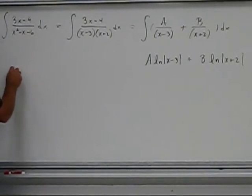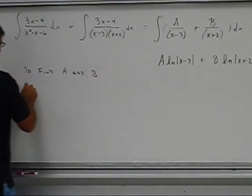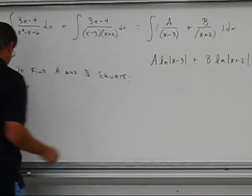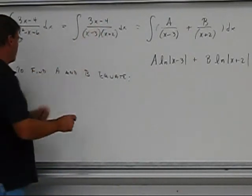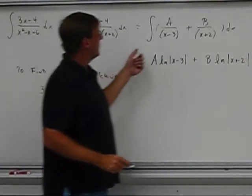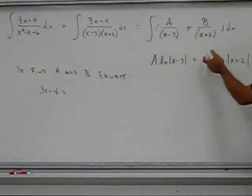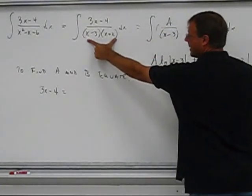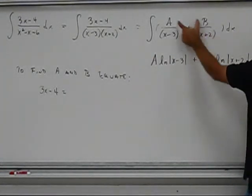So what we have here to find a and b, equate, let's equate this numerator here, 3x minus 4, with what I would get as a numerator over here if I were to recombine these fractions. So what I mean by that is, if I were to recombine these fractions, they would have a common denominator of this. In the process of combining the two fractions,